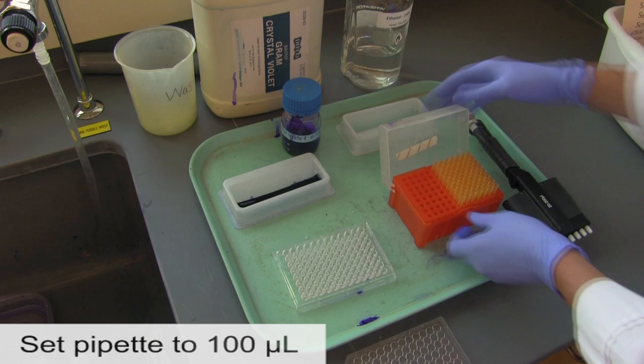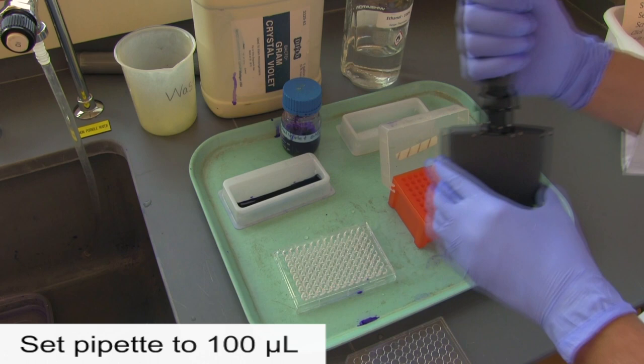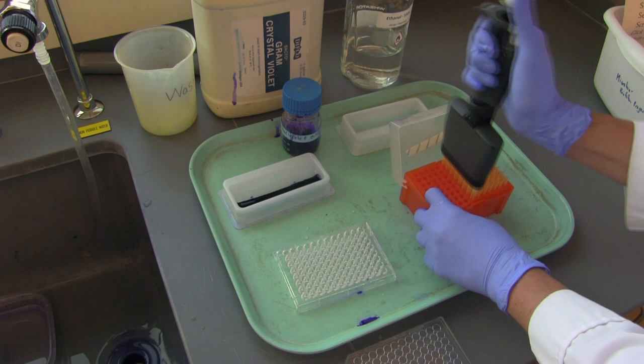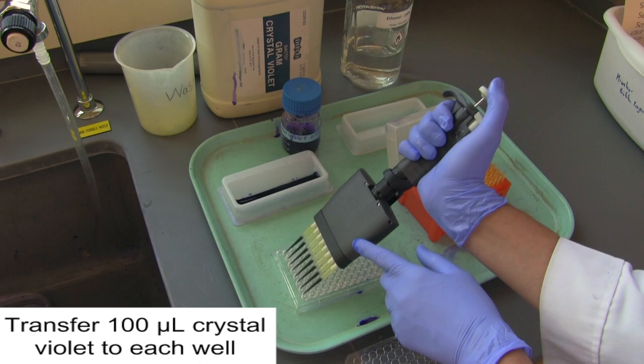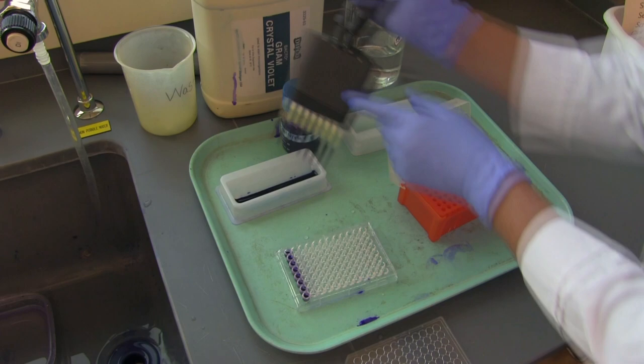Next, set your multi-channel pipette to 100 microliters. Pick up eight tips and transfer 100 microliters of crystal violet into each well. You may reuse the same tips.